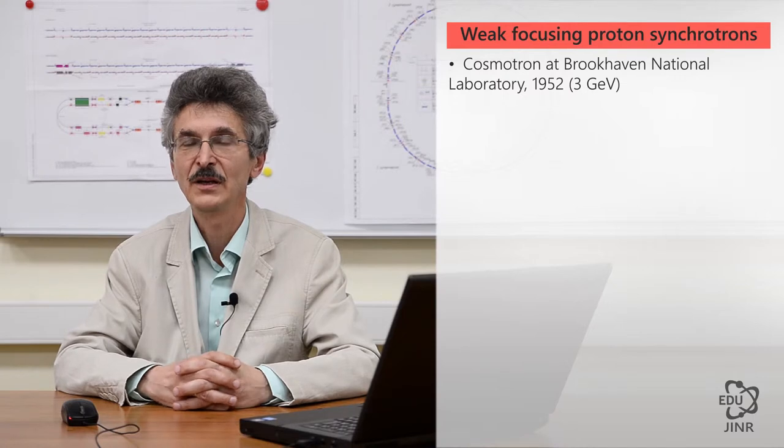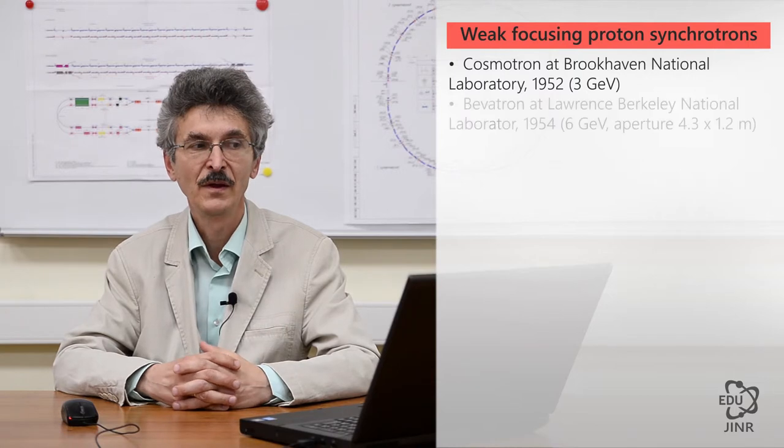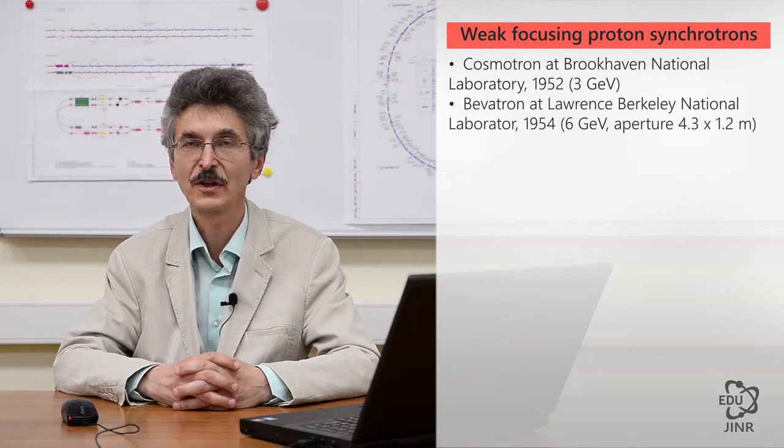The Cosmotron at Brookhaven accelerated protons up to the energy of three gigaelectron volts. In 1952, it was put into operation.